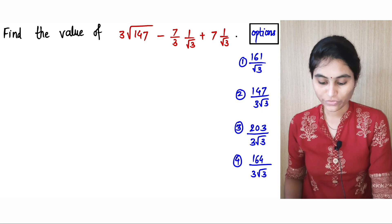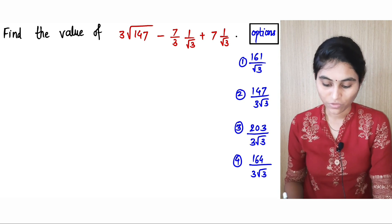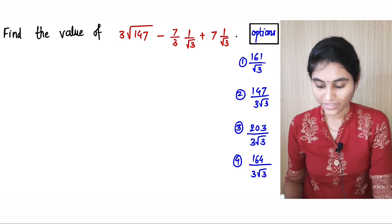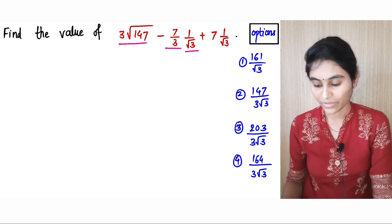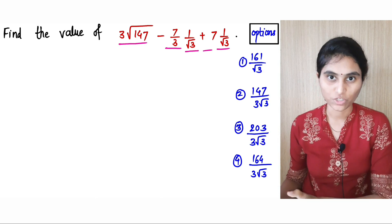Find the value of 3 times root 147 minus 7 by 3 times 1 by root 3 plus 7 times 1 by root 3, and the options are given.